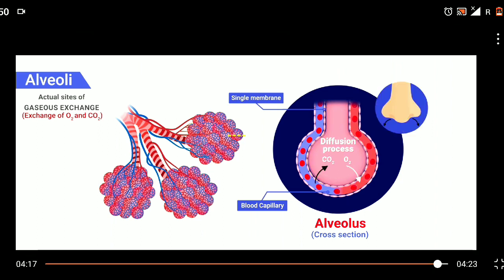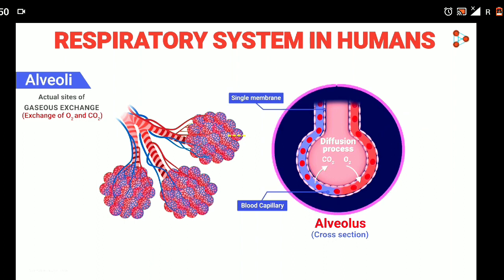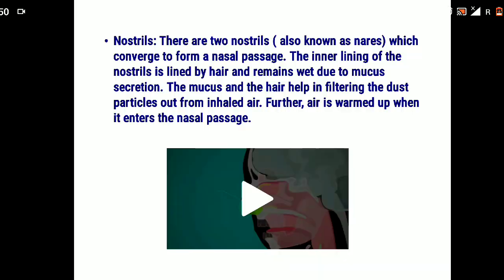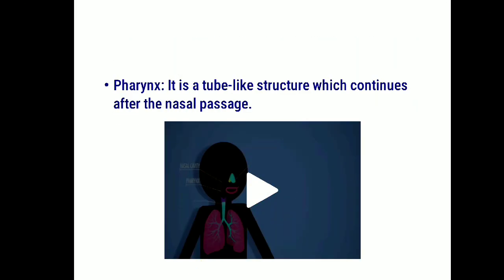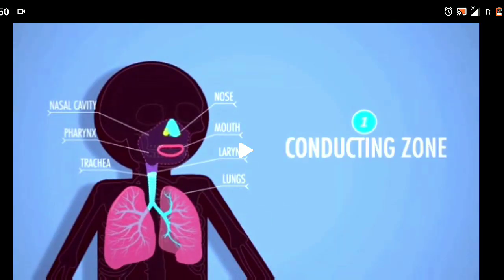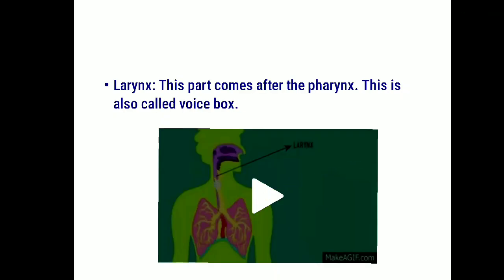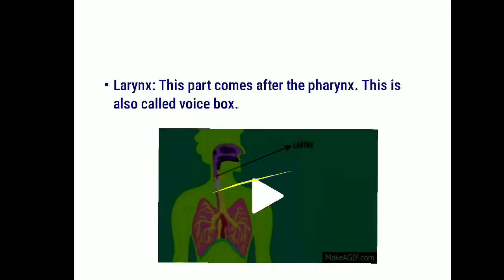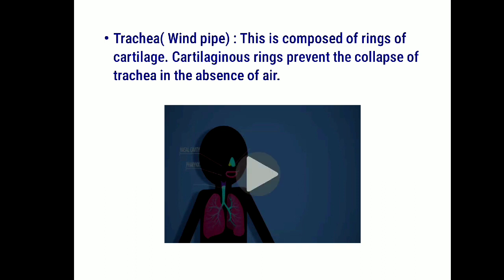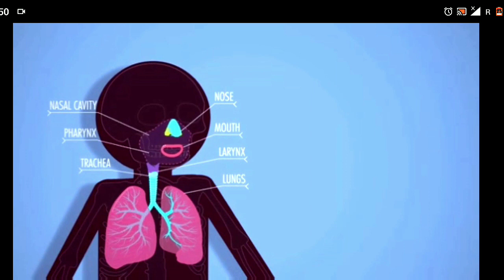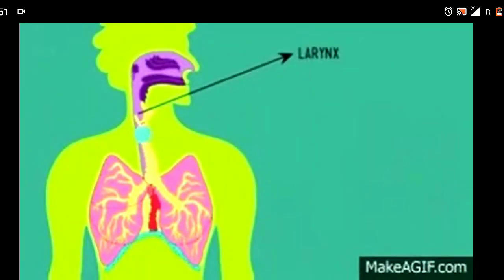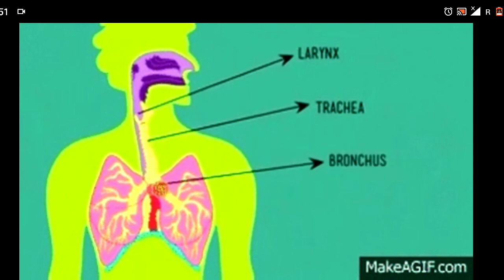Let us quickly revise what we learnt. Nostrils are also known as nares and they have an inner lining of hair and mucus which helps in filtration of air. Then comes the pharynx, a tube-like structure continuing after the nasal passage. The larynx, which is the voice box, comes after the pharynx. Then comes the trachea, also known as the windpipe, which is composed of rings of cartilage.